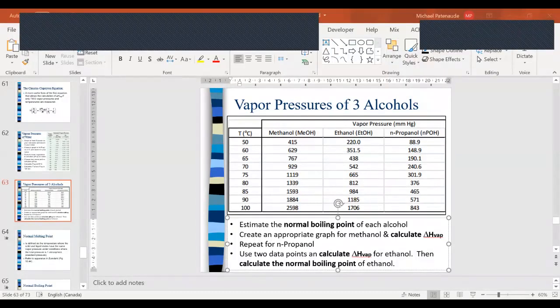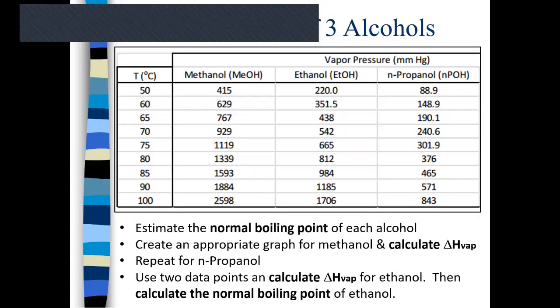In this video we're going to take a look at how to use the graphing calculator to graph data and to apply the Clausius-Clapeyron equation to find the heat of vaporization for a liquid. On the screen you see vapor pressures for different alcohols. We're going to focus for this video on the first alcohol in the table, methanol.